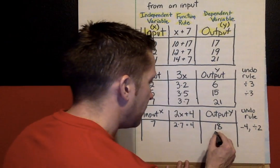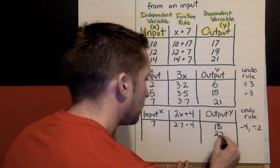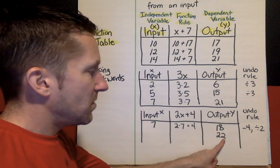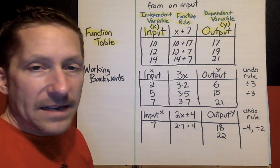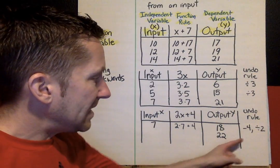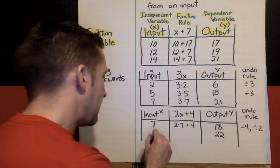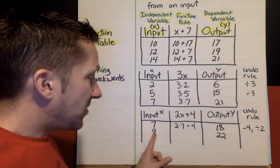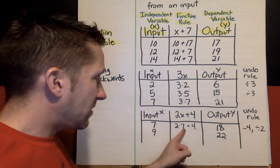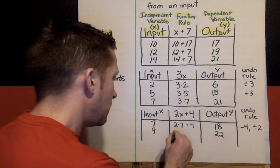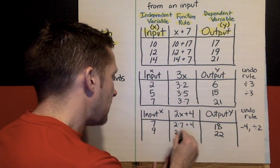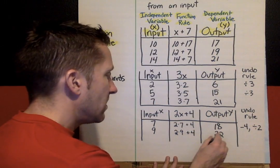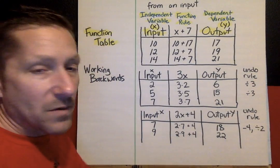Let's look at an output of 22. This time I'll undo the rule. What's 22 minus 4? I'd get 18. What is 18 divided by 2? I would get 9. But let's check this just to be sure. I think my answer is 9, but let's plug it into the rule. 2 times 9 is 18 plus 4, and it does work. We get 22.